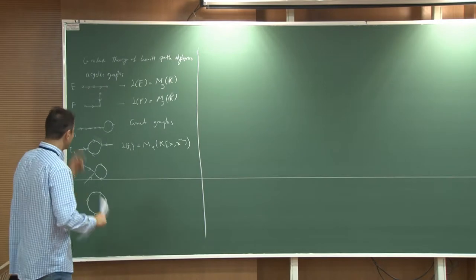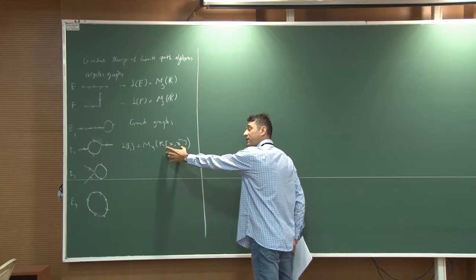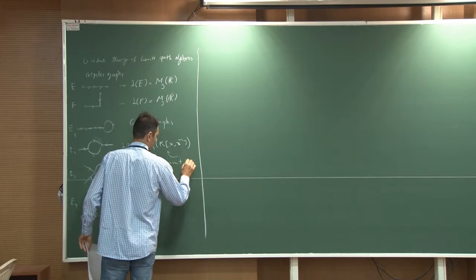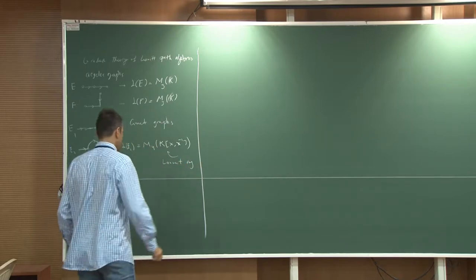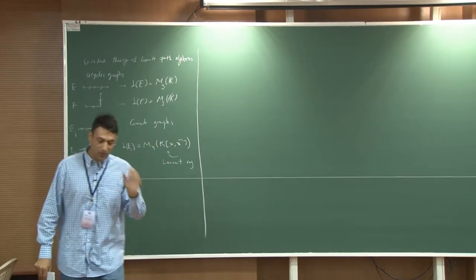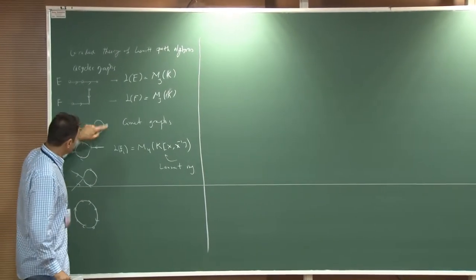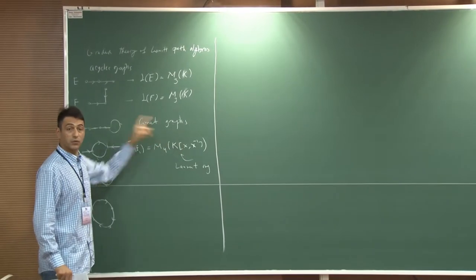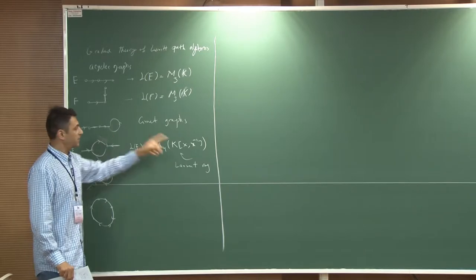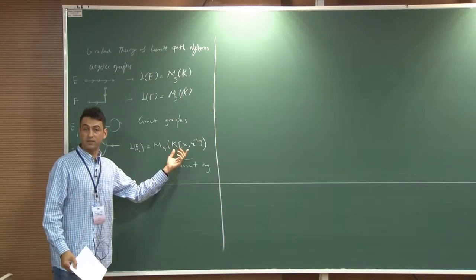Great question. So here, the field doesn't appear — the Laurent ring appears. If you wonder why you get a Laurent ring K[x, x⁻¹], the informal description is: here you're allowed to do one cycle, which represents x. If you do it twice, that's x squared; three times, x cubed. But you're allowed to go backward also, and that represents x minus one. That's the informal justification for why the Laurent ring appears.